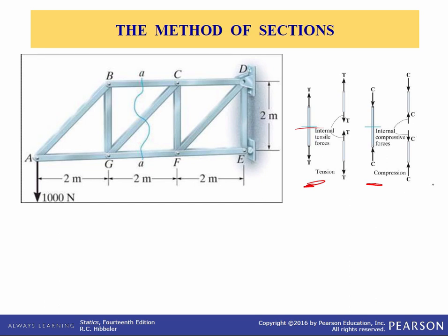The method of sections can also be used to cut or section the members of an entire truss. If the section passes through the truss and the free body diagram of either of its two parts is drawn, we can apply the equations of equilibrium to that part to determine the member forces at the cut section. Since only three independent equilibrium equations exist, we should try to select a section that, in general, passes through not more than three members in which the forces are unknown.